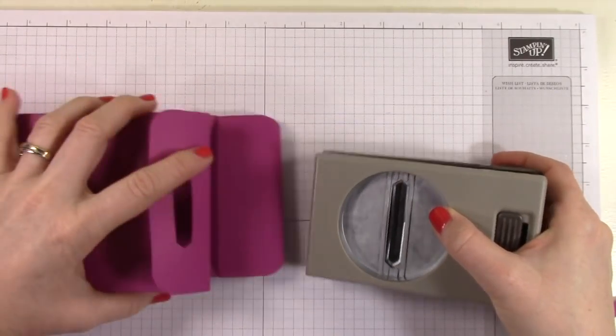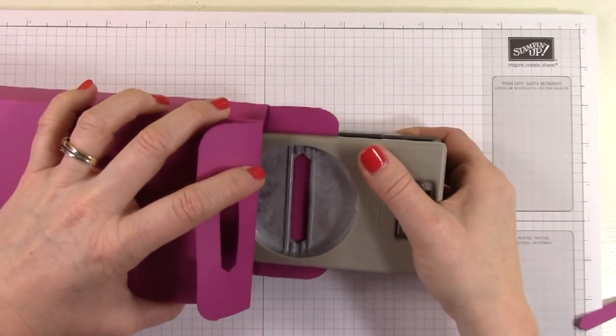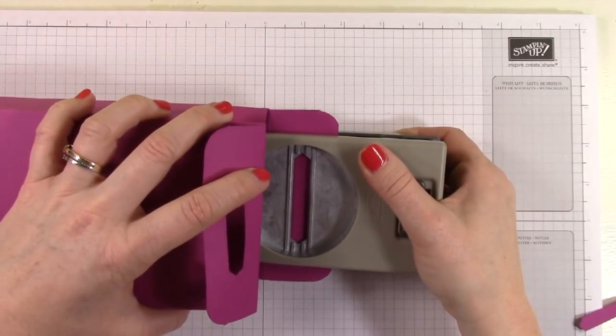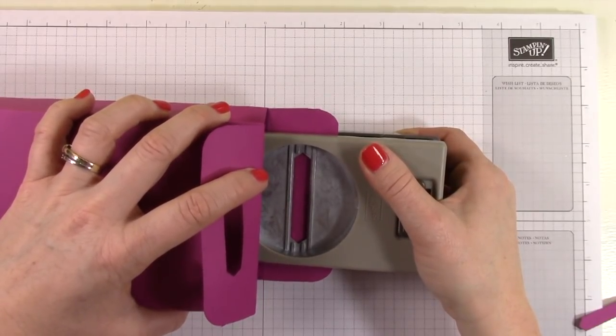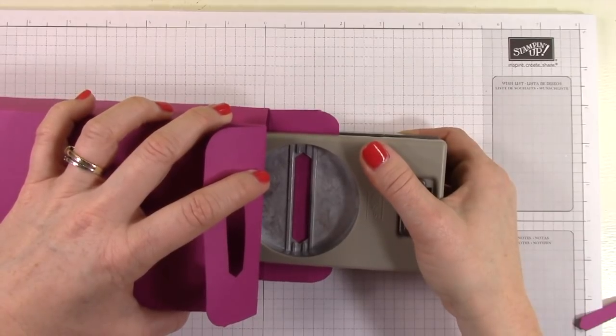Then I'm going to pull back that flap, slide this label punch in, classic label punch, and punch again. And this will create the top of my box.